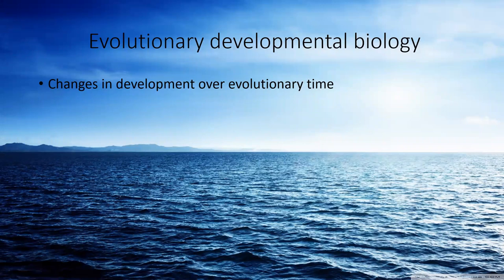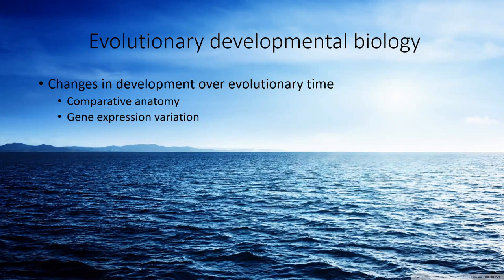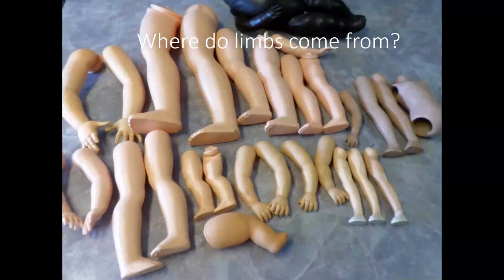Evolutionary developmental biology is the study of changes in development over evolutionary time. We study it using comparative anatomy and gene expression variation — variation in time, in place, and in the amount of gene expression. So where do limbs come from? Before we had limbs, we had fins, and limbs come from fins.